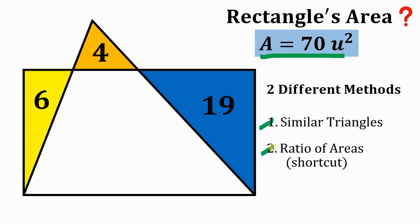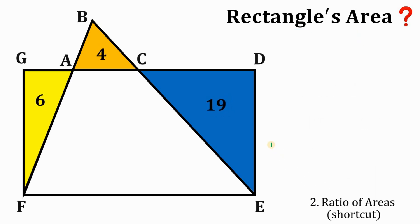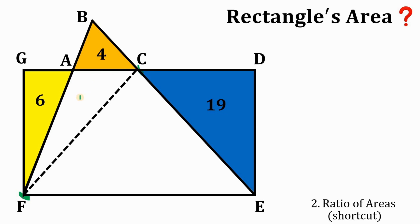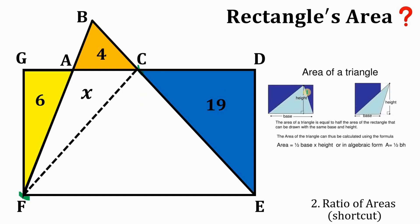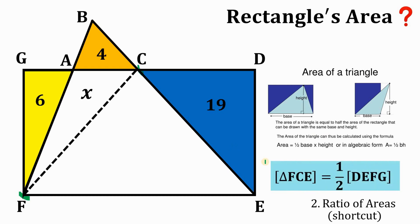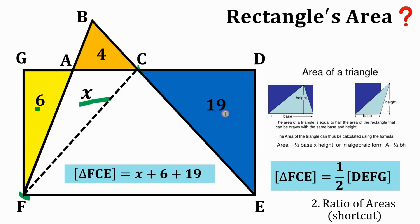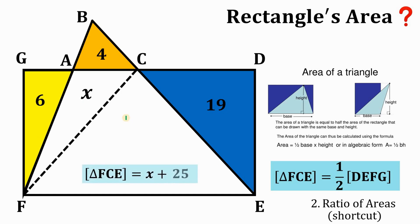Now let's begin with our second solution. Let's have this figure again. To use the ratio of areas, we're going to connect vertex F and C. Let's call area B equal to X. We will use the concept that the area of a triangle equals half the area of a rectangle drawn with the same base and height. Therefore, the area of triangle FCE equals half the area of rectangle DEFG, which we can write as 6 plus X plus 19, or X plus 25.